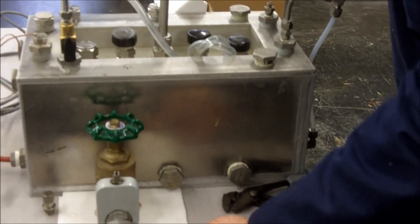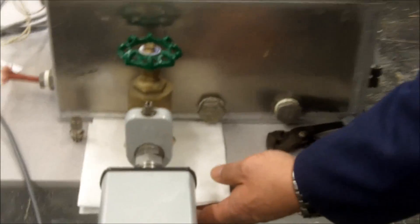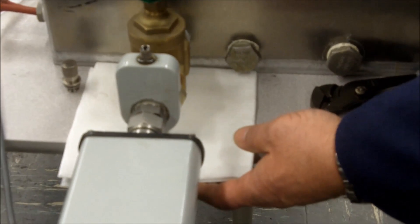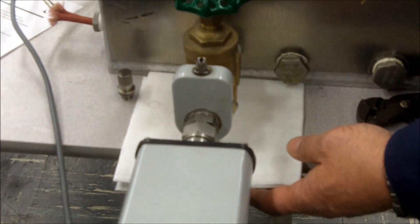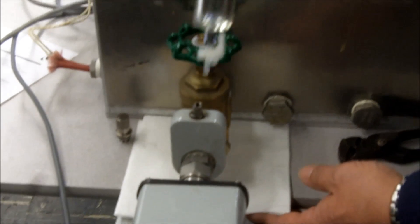Once you feel you've purged enough of the oil and flushed out any debris that could be inside of that valve, you want to put your lure syringe in the valve.